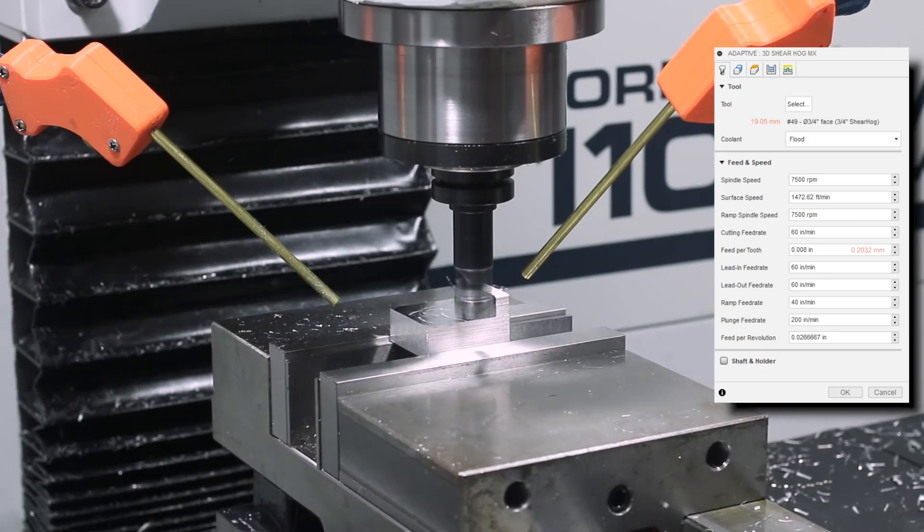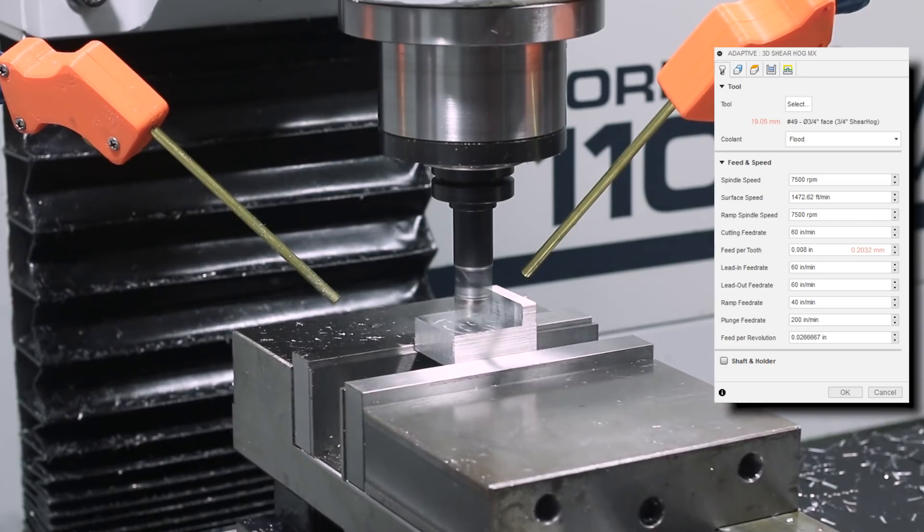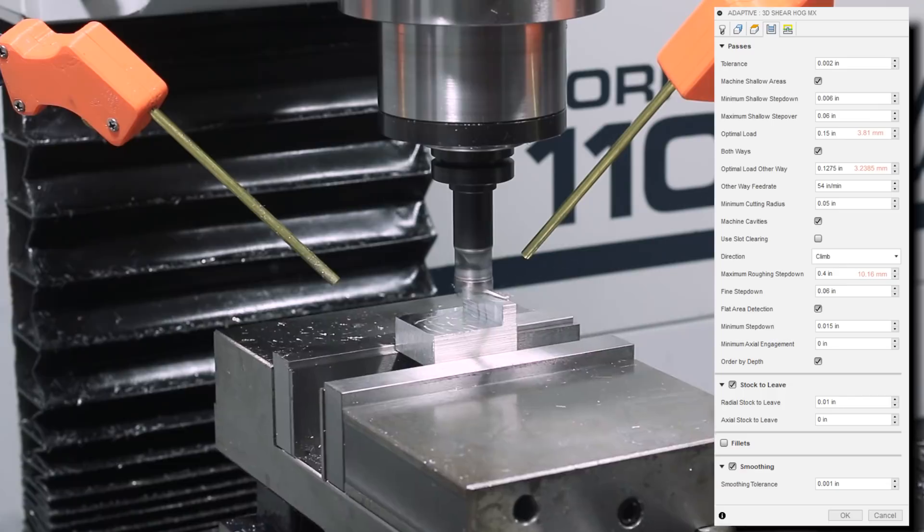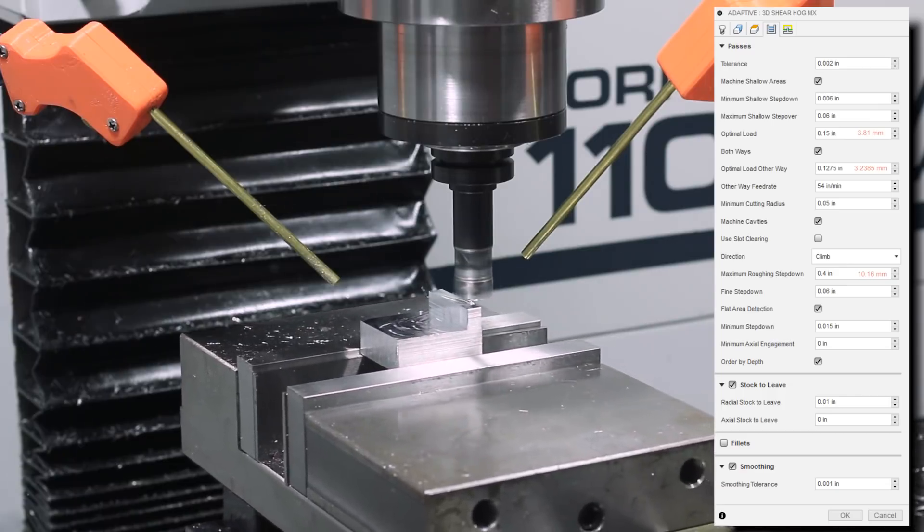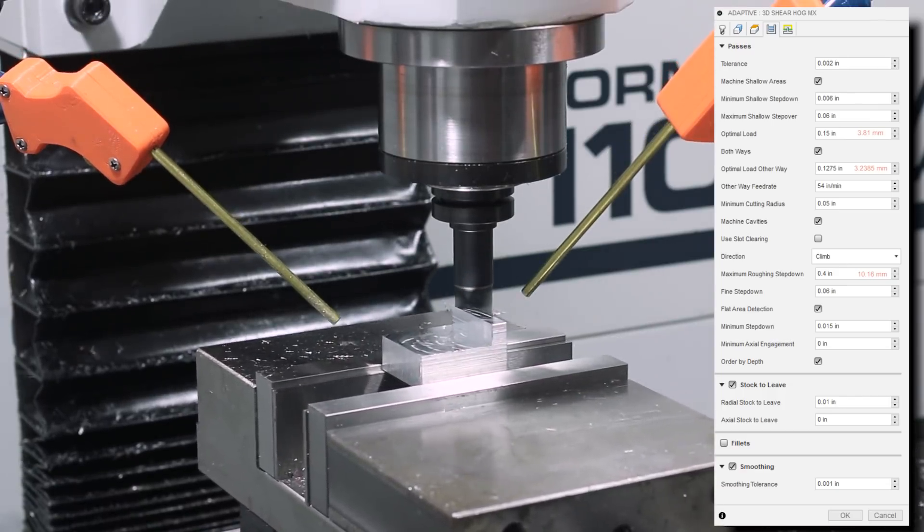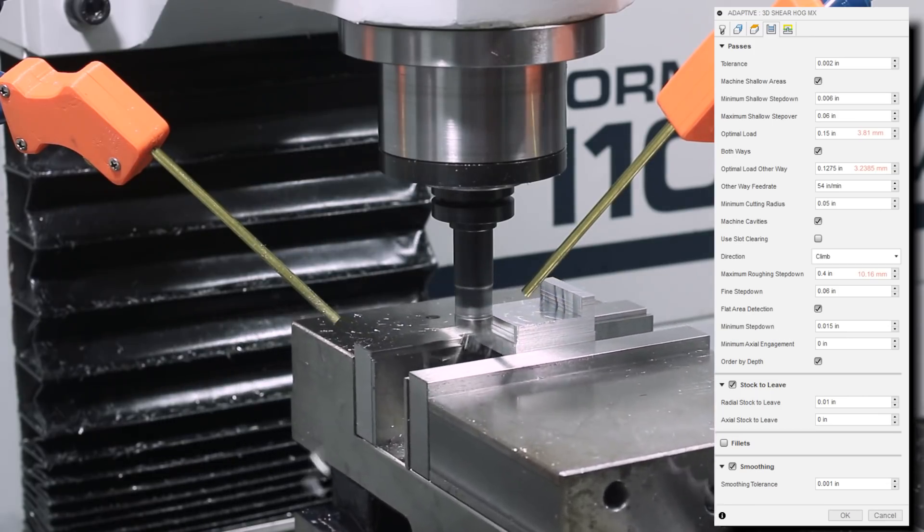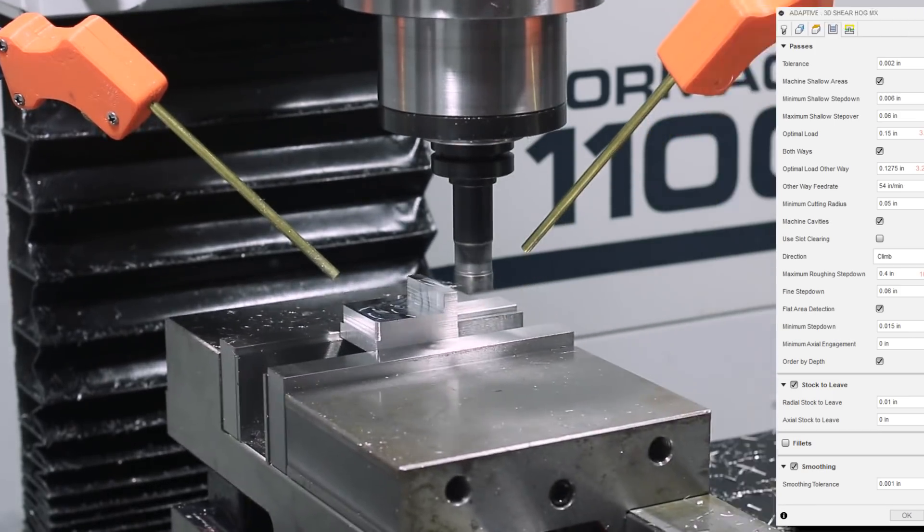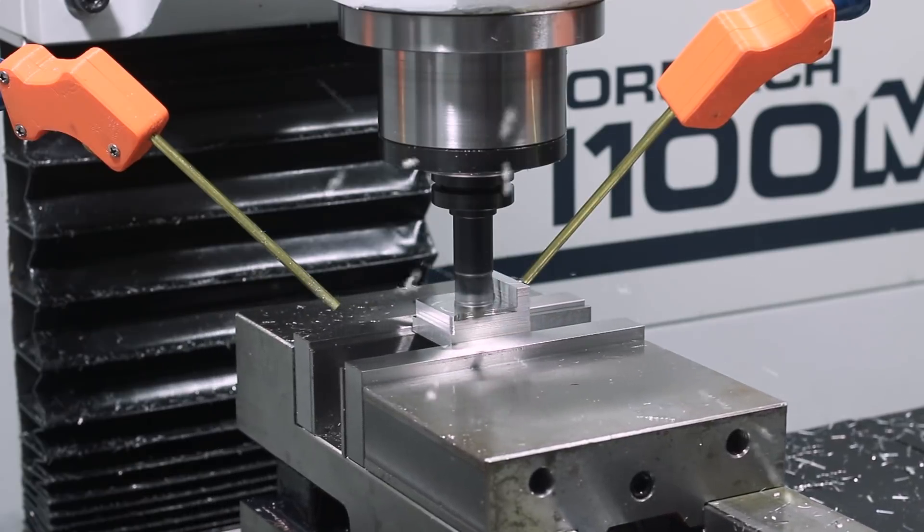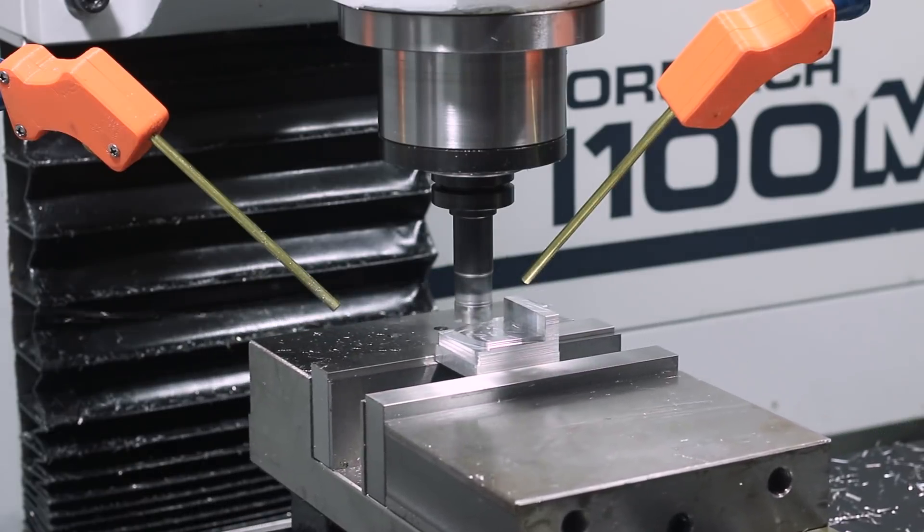Speeds and feeds for this are 7500 RPM, 8 thou per tooth, and on the passes tab we have an optimal load of 0.15 on the climb cut and 0.1275 on the conventional cut with a maximum roughing step down of 0.4 inches. Like I said, full depth, trying to make use of every bit of sharp carbide they give you on that insert.